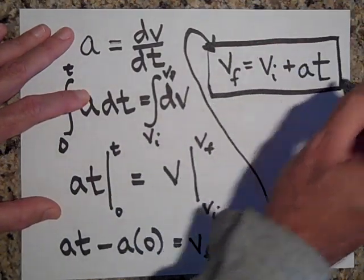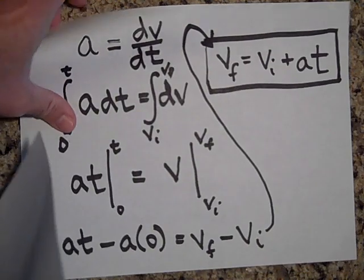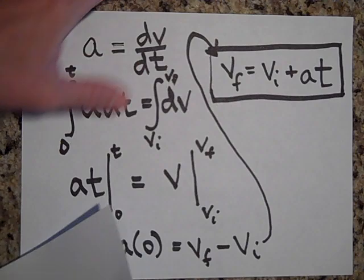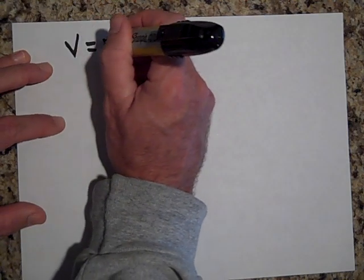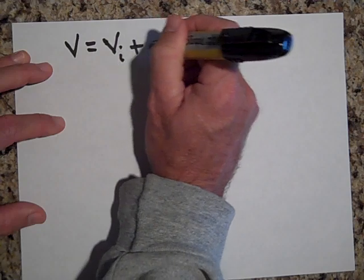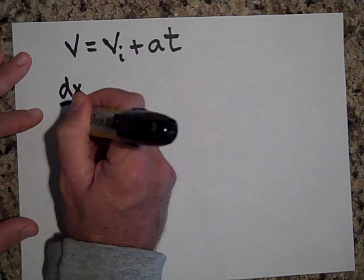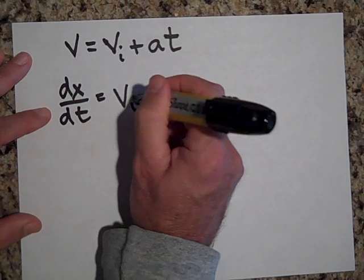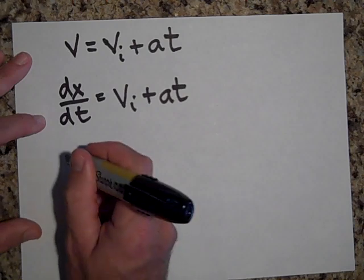Now let's take that equation. Since v-final is the velocity at any time t, and velocity equals dx/dt, I'll rewrite it as: dx/dt equals v-initial plus a·t. That means v in our equation is the derivative of x with respect to time. Let me bring the dt to the other side.